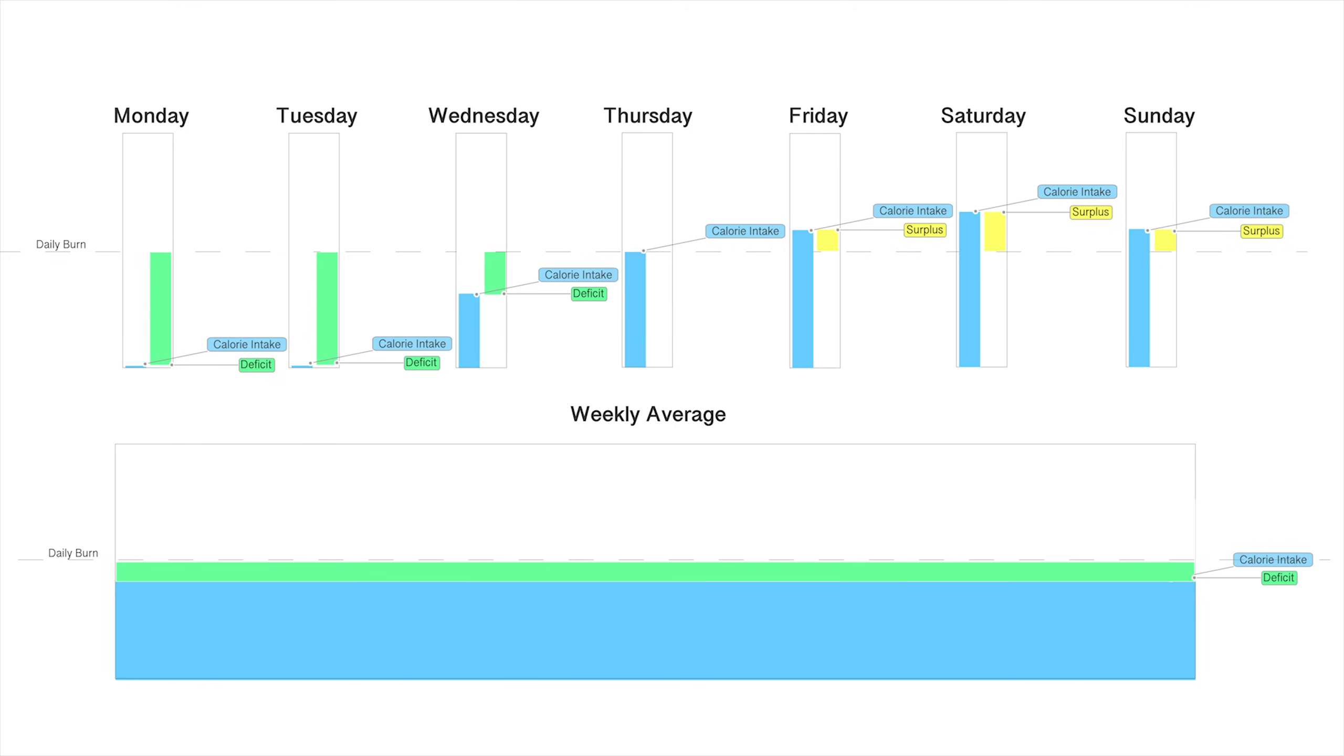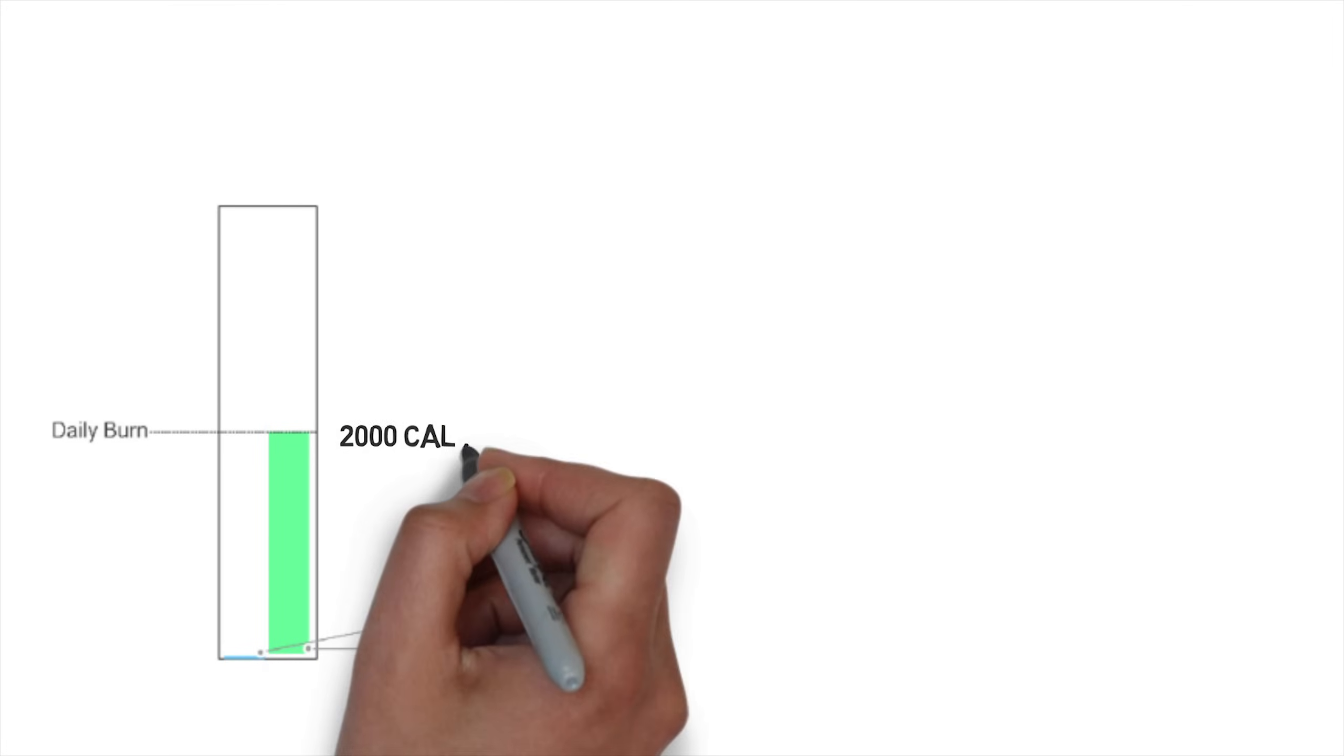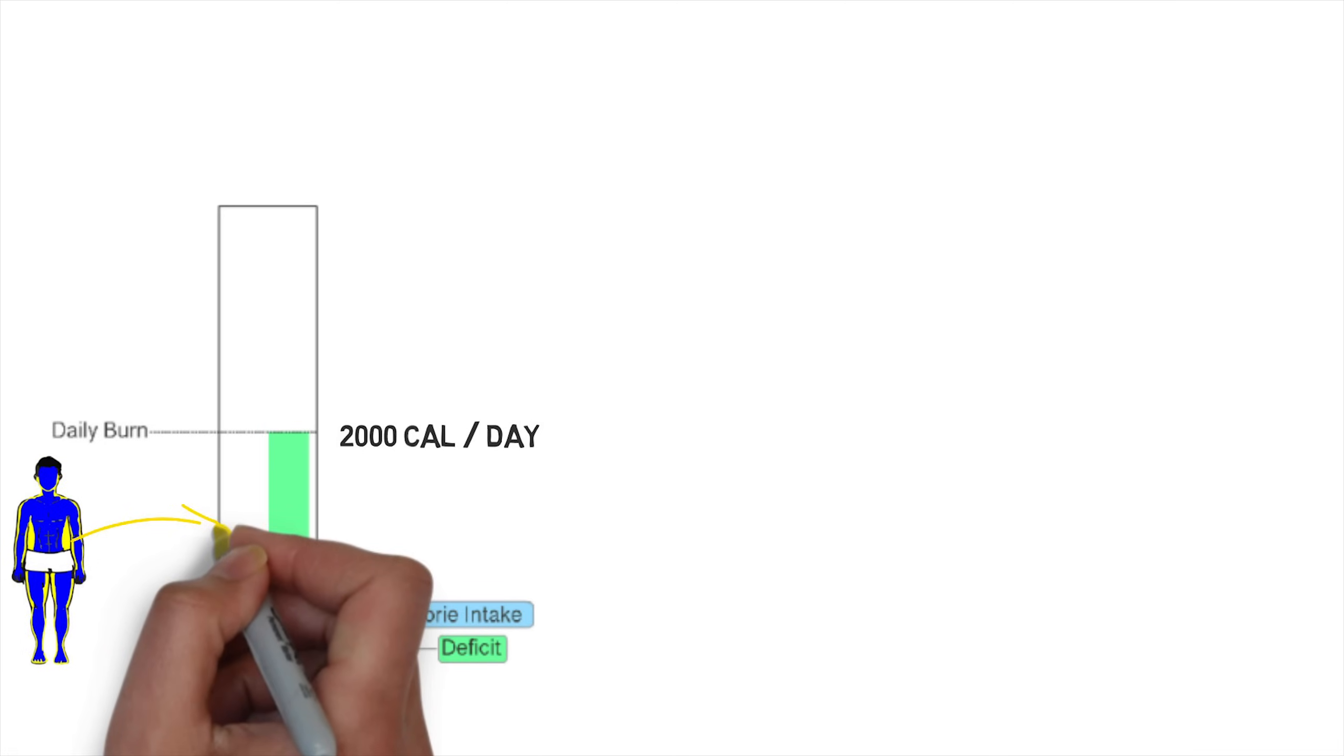During your fasting window, your body continues to burn calories. It just now needs to turn to stored fat to get them. This is why, in as little as 72 hours, you can lose one to two pounds of fat. This level of weight loss could take two to four weeks on a traditional cutting diet.